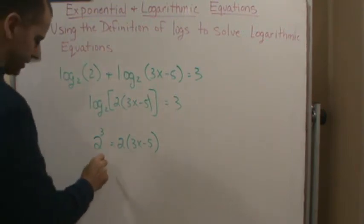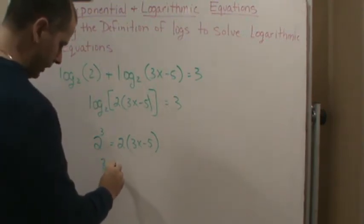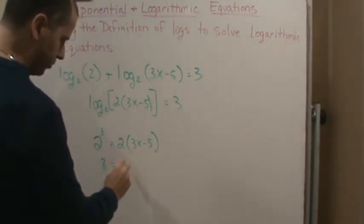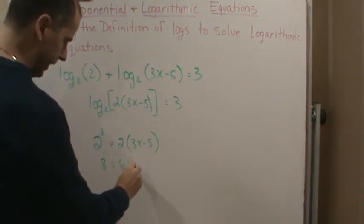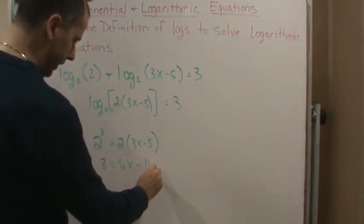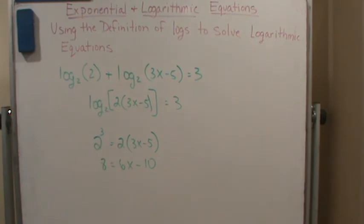What's 2 to the 3? That's 8. So I know 8 equals, and I can use the distributive property here, which is just 6x minus 10. And so now I've got an equation I can solve for x.